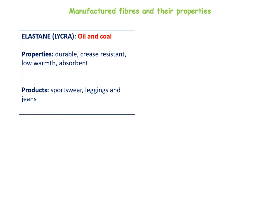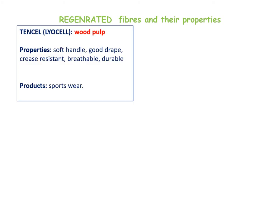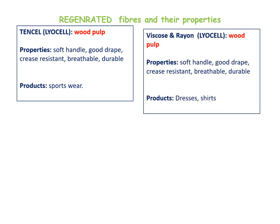Elastane, also known as Lycra, is durable, crease resistant and extremely stretchy, making it suitable for sportswear, leggings and leotards. Regenerated fibres come from wood pulp where chemicals have been added. An example of this is Tencel — it is soft to handle with a good drape, crease resistant and breathable, making it suitable for sportswear. Viscose and rayon also come from wood pulp; they are soft to handle with good drape, crease resistance, breathability and durability, and are used more for fashion garments such as dresses and shirts.